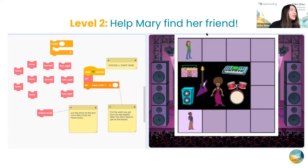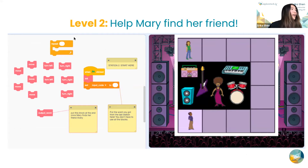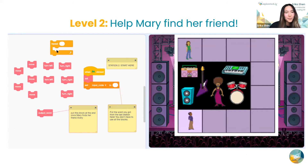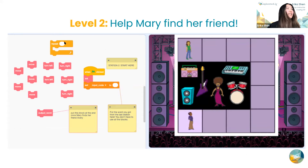That is what level two will be about. You'll see here we have a screenshot of a code block, and your loop will basically be this little repeat block, because you'll just repeat whatever you put inside of it as many times as you specify in that little white space.